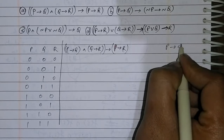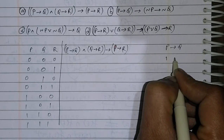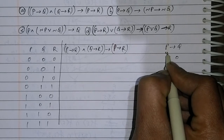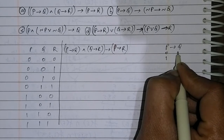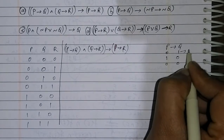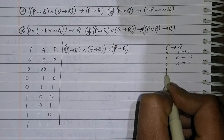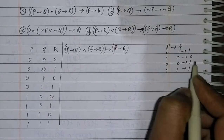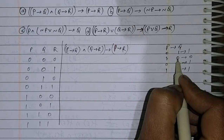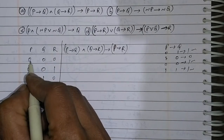P implies Q is false whenever P is true and Q is false. Whenever P is false and Q is true, it is one; it is one; it is zero. When both are true, then it is also true. P implies Q is false only when P is true and Q is false; otherwise P implies Q is always true. We will use this concept here.